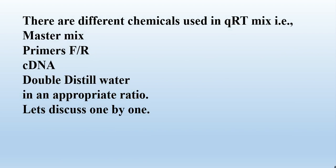There are different ingredients used in the qRT-PCR mix: one is the master mix, others are the primers of your specific genes — the forward primer and the reverse primer — then the cDNA of the sample in which you want to check gene expression, and finally double-distilled water. All these ingredients are used in a specific ratio.